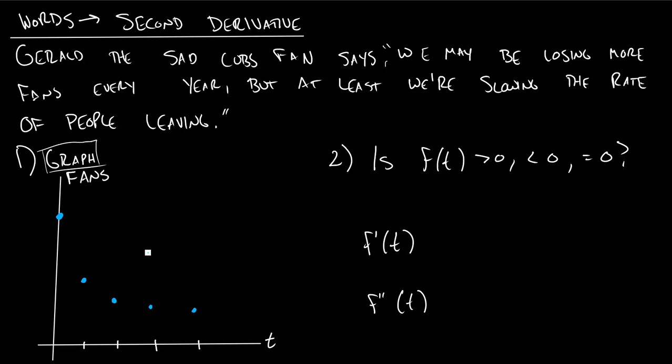They have that new general manager and people are starting to say, maybe I shouldn't hate the Cubs and eventually maybe in the future it'll take off, but that's not what Gerald's talking about right now. He's just talking about slowing the rate at which people are leaving. So remember this word rate means derivative.